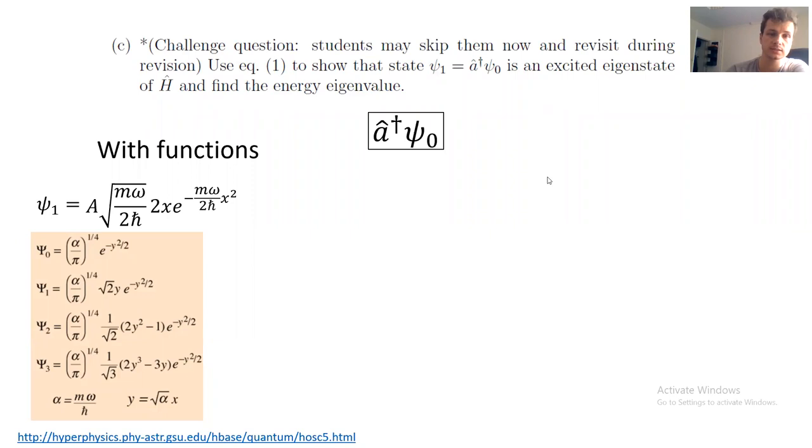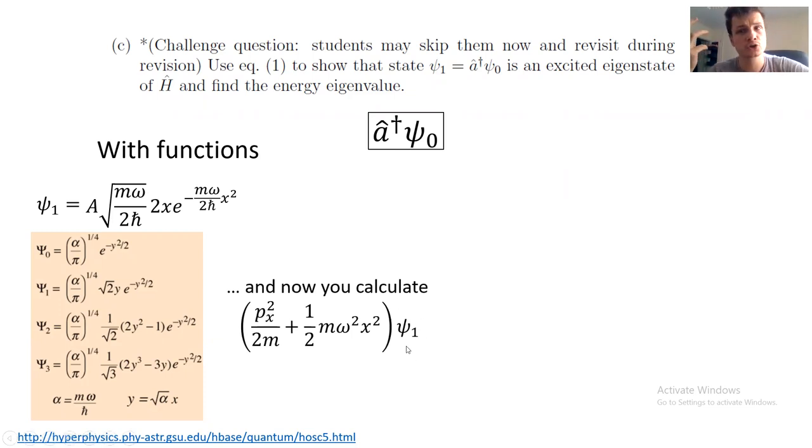We are not done. We now have to calculate the Hamiltonian on this. And we will obtain something that is proportional to psi one. And the constant of proportionality is going to be precisely the energy, which we are asked to find. So I'm going to leave this as an exercise for the reader.